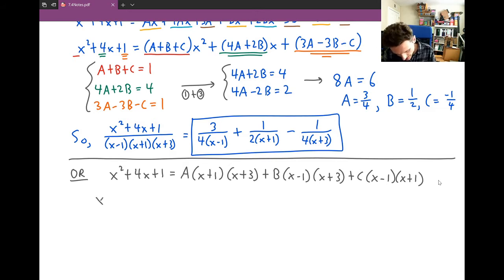Here we're plugging in x = 1. On the left side, we get 1² + 4(1) + 1. On the right side, we get A(1+1)(1+3).